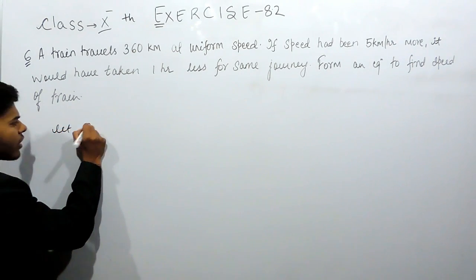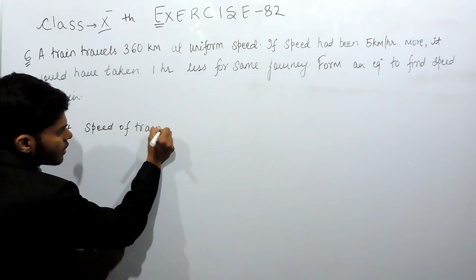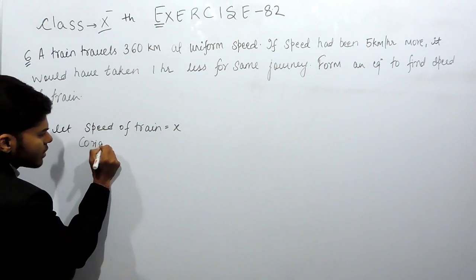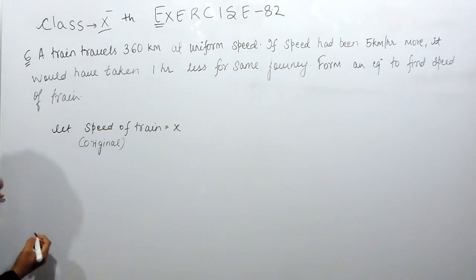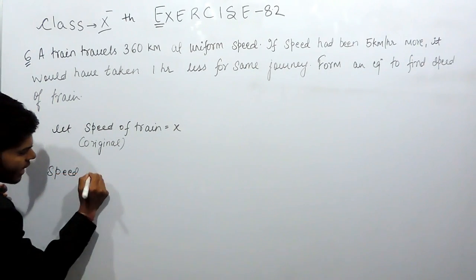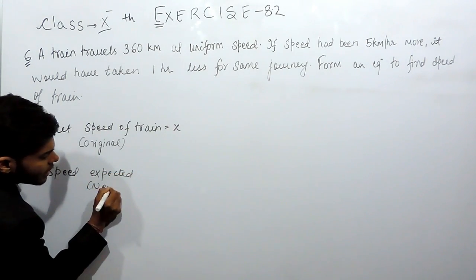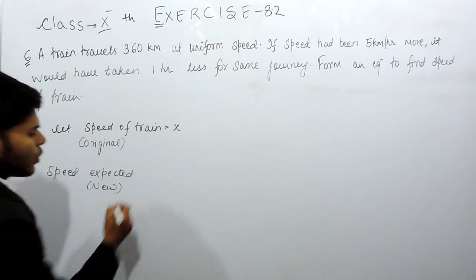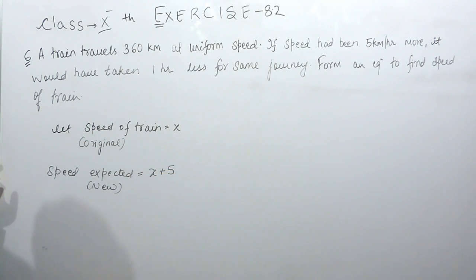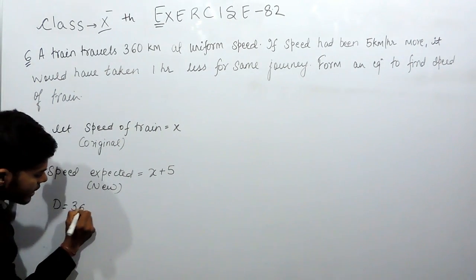Let speed of train equals to x, or we can say that original speed. Now, speed expected or the new speed that the question is saying will be equals to 5 more than the previous, that will be x plus 5. Distance was always equals to 360 km.